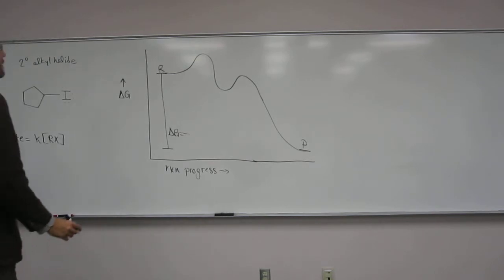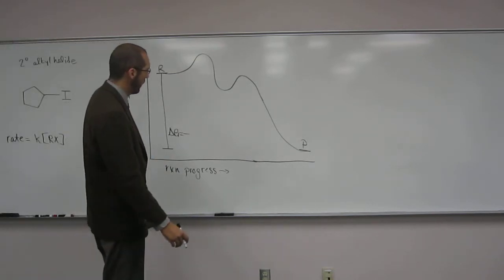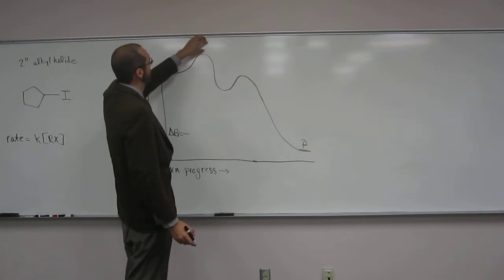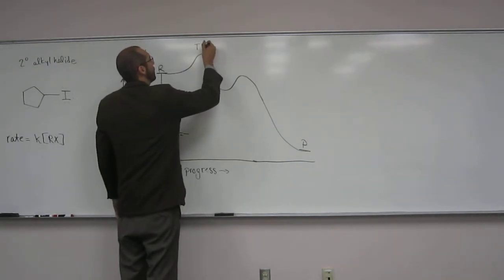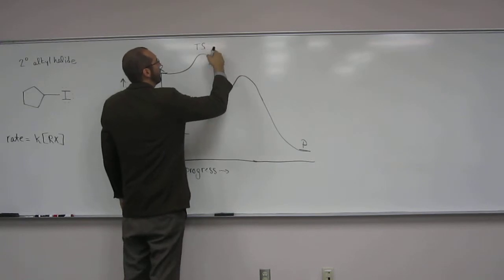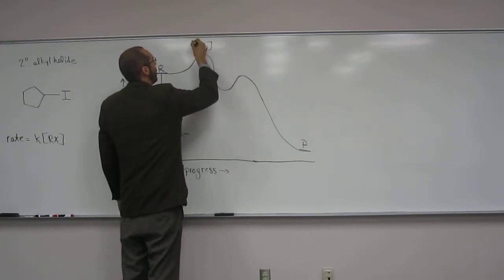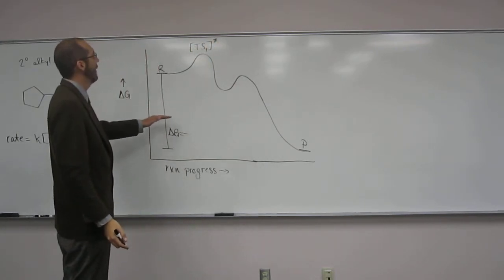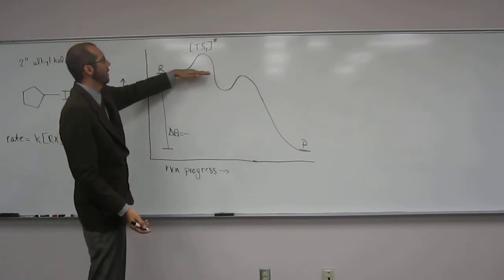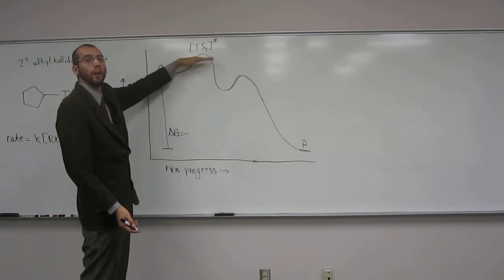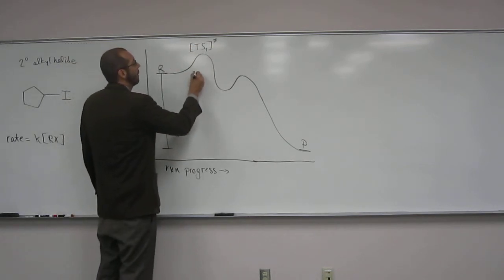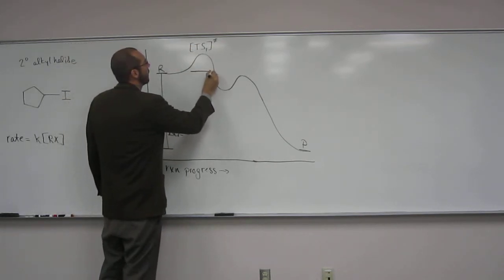So, let's label some portions of this graph. So, what's up here? Transition state. Yeah. The transition state. This one is transition state one, right? And, what do we call the energy difference from here to here? Activation energy. The activation energy. Is the activation energy positive or negative? Positive. Positive.